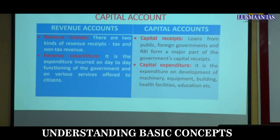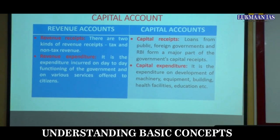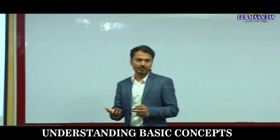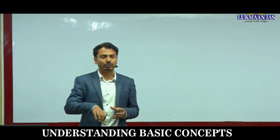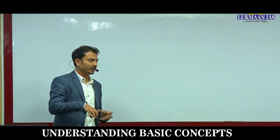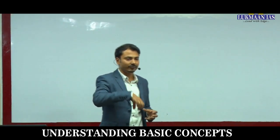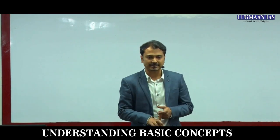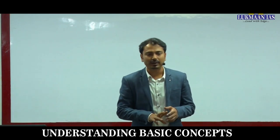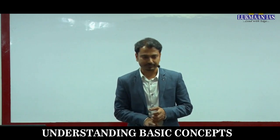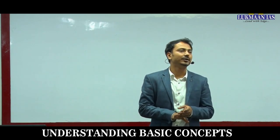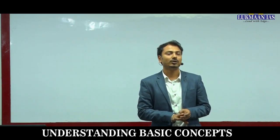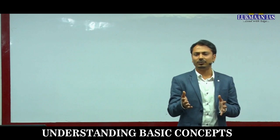The Revenue Account has two parts — receipts and expenditure. Revenue receipts can be tax revenue and non-tax revenue. Examples of non-tax revenue include dividends, disinvestment proceeds, grants, and interest on loans given by the government. Fines, penalties, and charges for services provided by the government are also included as non-tax revenue.